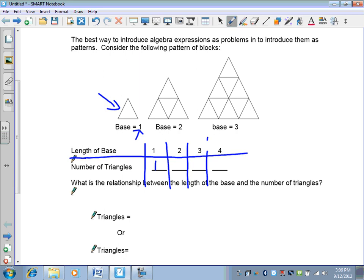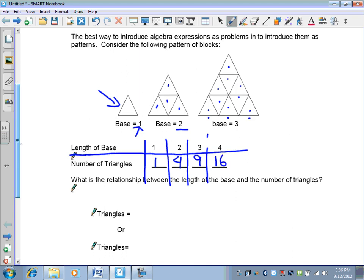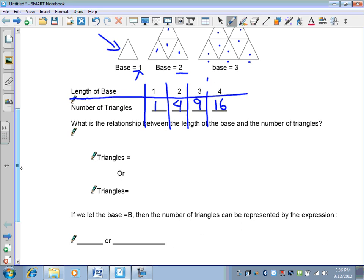You notice on base two, we now have one, two, three, four triangles. On a base of three, we have one, two, three, four, five, six, seven, eight, nine triangles. And if you were to continue this pattern, base four would be 16.